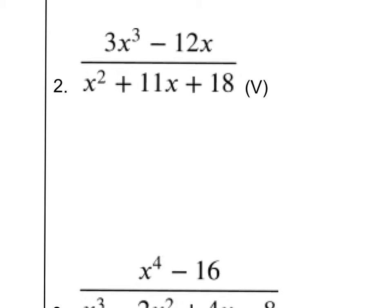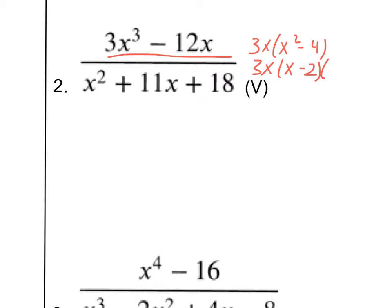Looking at number 2, our first step is always going to be factoring the top. I see a 3 and an X I can take out of both of these. When I do that, we get 3X and then X squared minus 4. I can go a little bit further with that because X squared minus 4 I can factor using difference of squares into X minus 2 and X plus 2.